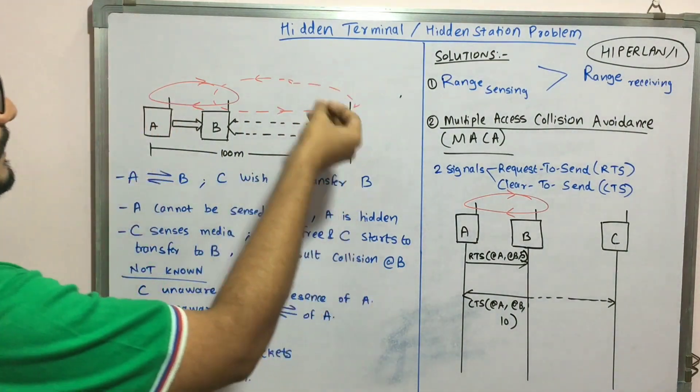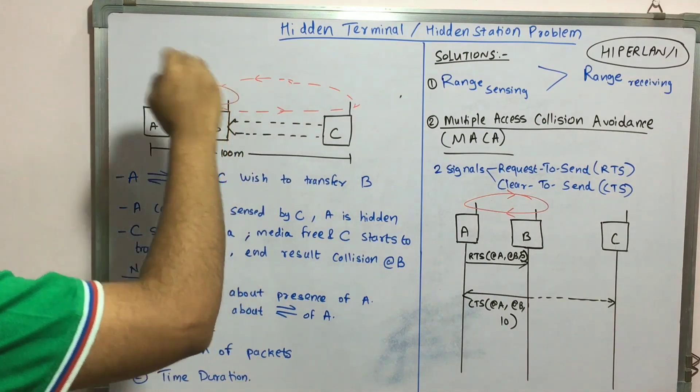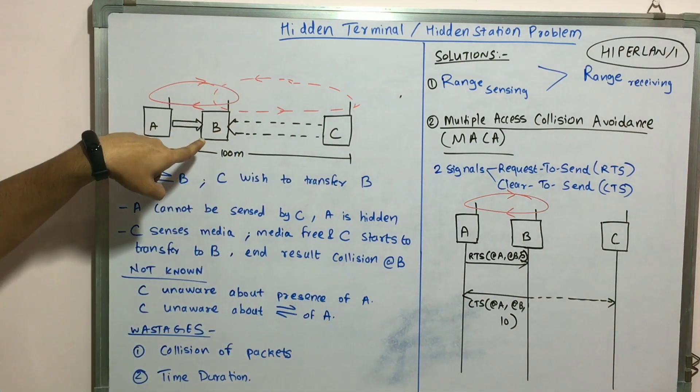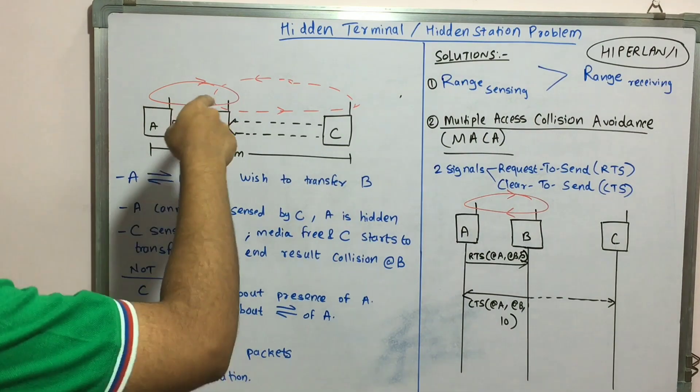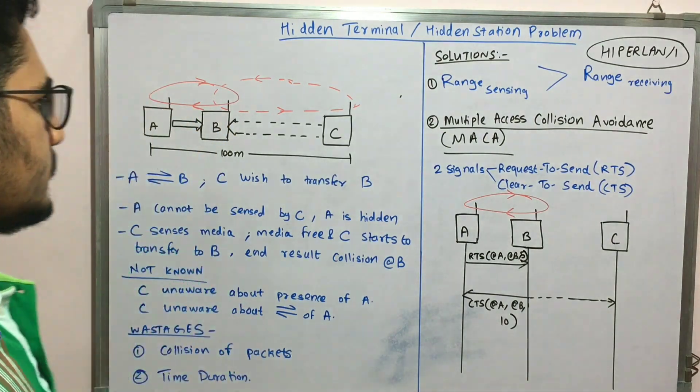So it will start to transfer. As a result, what happens is this communication is ongoing and C also starts the communication. So what happens is basically the collision happens at this point, that is at station B, and so the packets get lost.